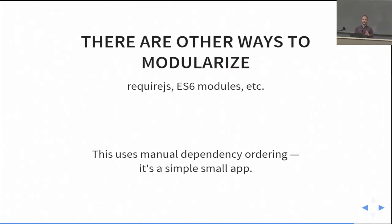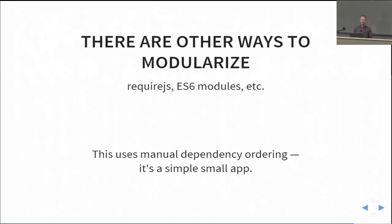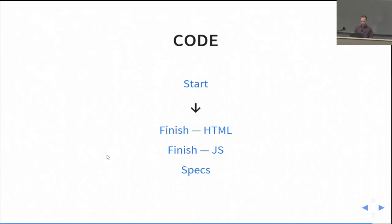There are other ways to modularize beyond the namespace pattern I used with StockRetriever. ES6 modules are around and look pretty cool. There's also AMD and CommonJS. I'm not saying one is better than the other — for this talk I wanted to stick with straight HTML, JavaScript, and jQuery. But those other approaches might be superior and have less boilerplate. ES6 modules might be the way forward. This approach uses manual dependency ordering, and for a simple app, that's probably okay.